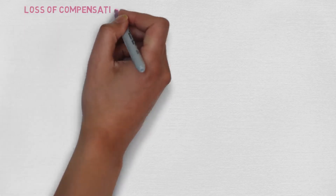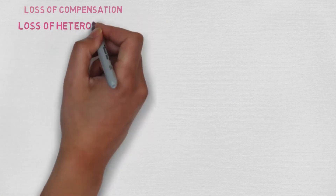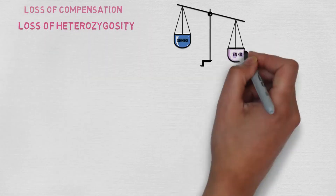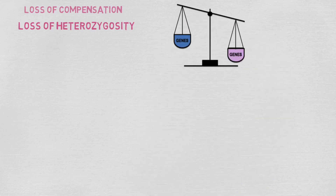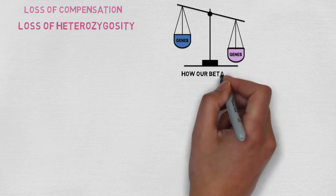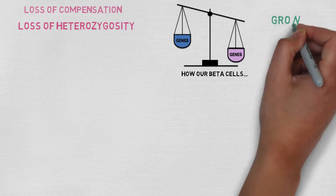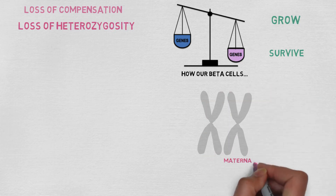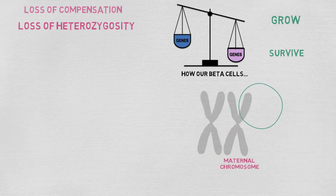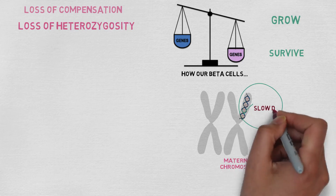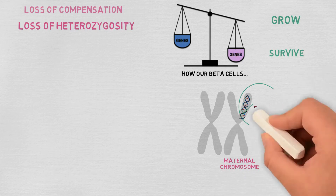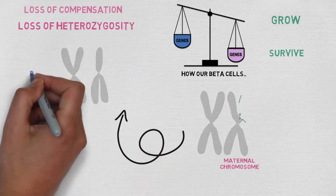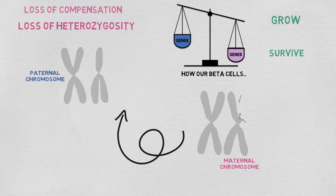This loss of compensation, known as loss of heterozygosity, disrupts the balance of genes which normally control how our beta cells grow and survive. In focal CHI, the part of the maternal chromosome that is lost contains genes which normally help to slow down growth. Without these, the growth-promoting genes in the father's chromosome can become overactive.